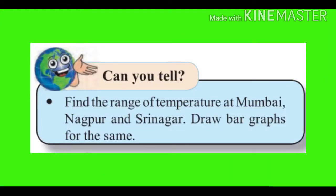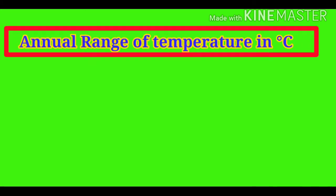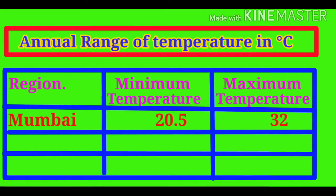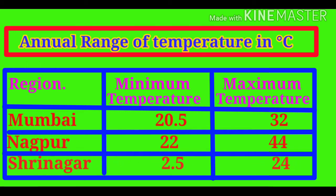Can you tell? Find the range of temperature at Mumbai, Nagpur, and Srinagar. Draw bar graphs for the same. Annual range of temperature in degree Celsius: Region Mumbai, the minimum temperature is 20.5 and the maximum temperature is 32 degrees Celsius. Second region is Nagpur: minimum temperature is 22 degrees Celsius and maximum temperature is 44 degrees Celsius. Third region is Srinagar: minimum temperature is 2.5 degrees Celsius and maximum temperature is 24 degrees Celsius.